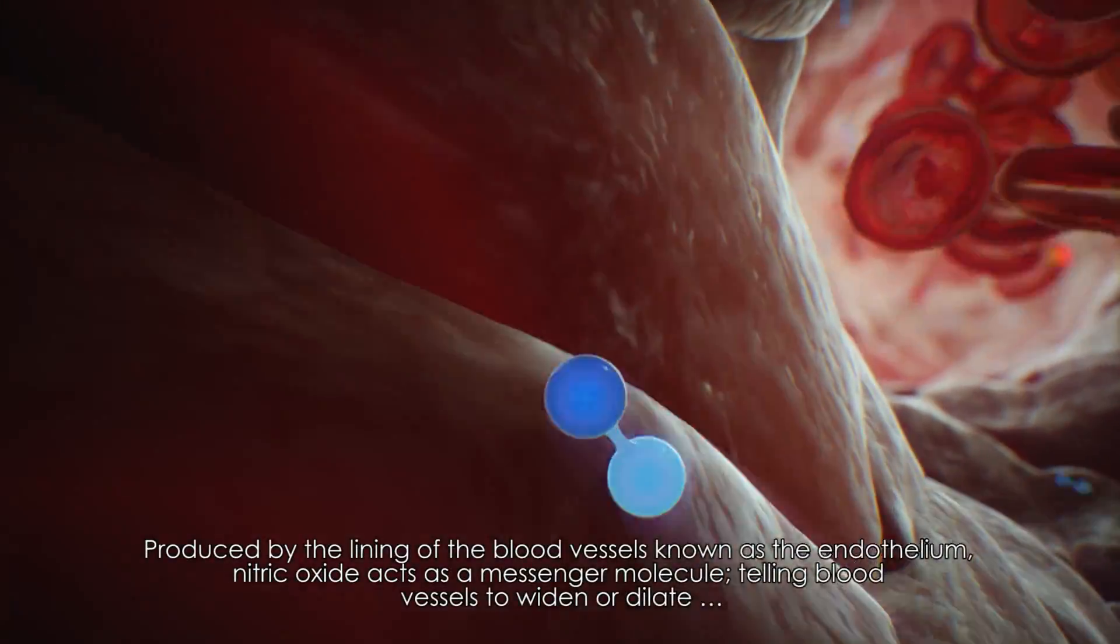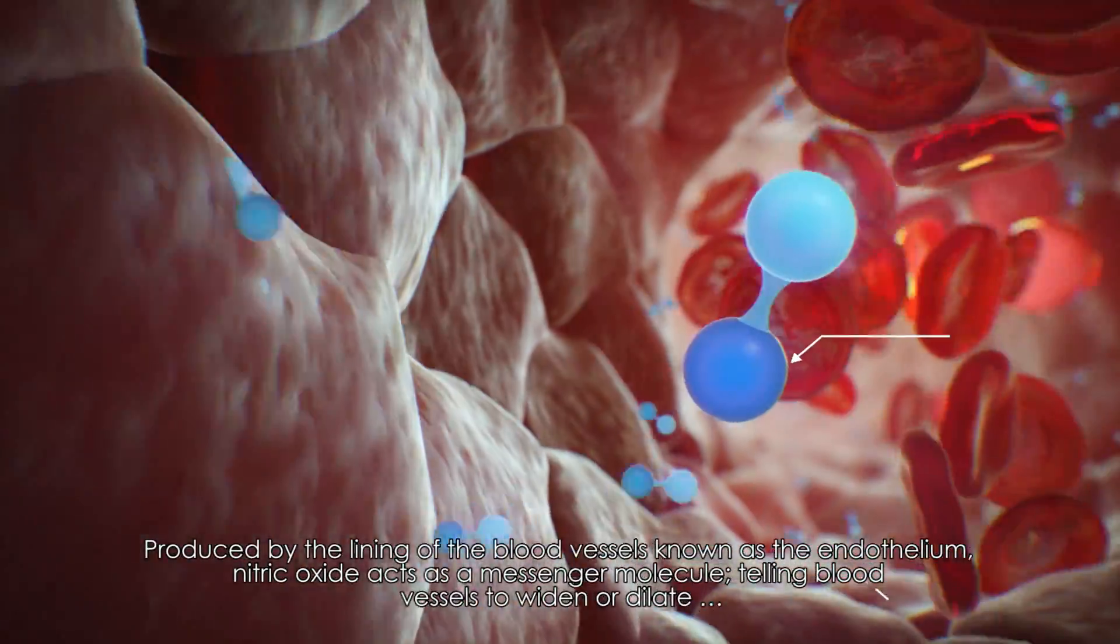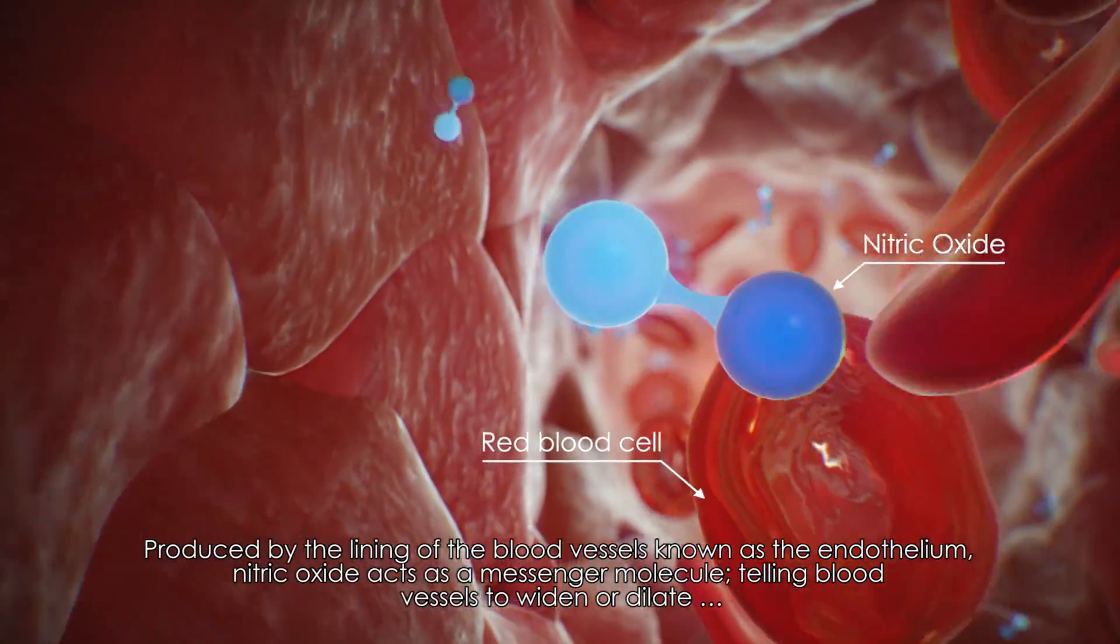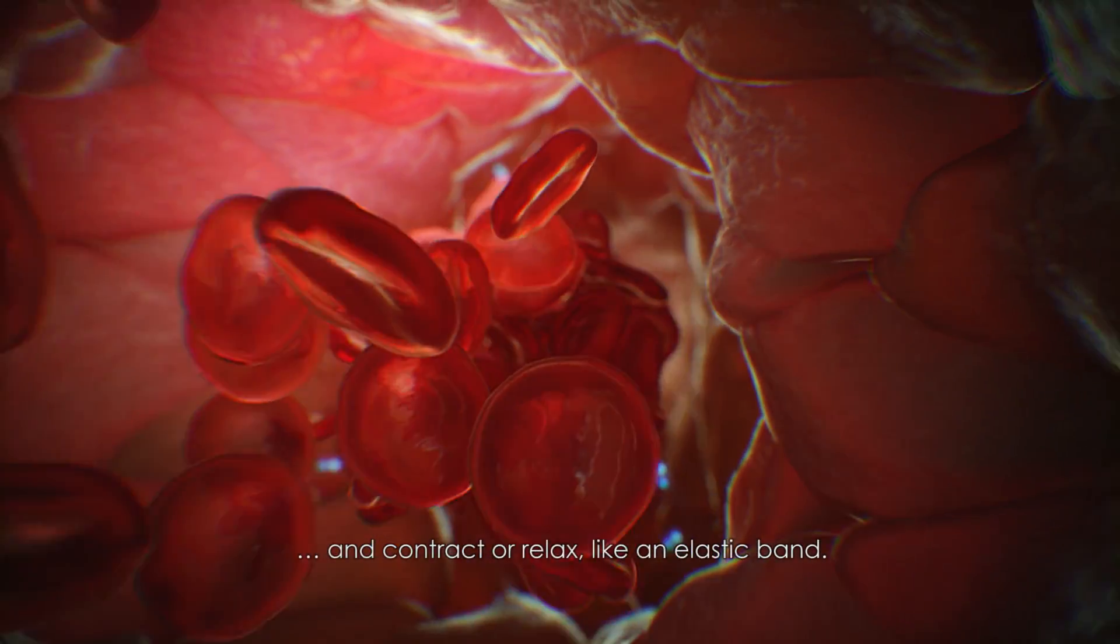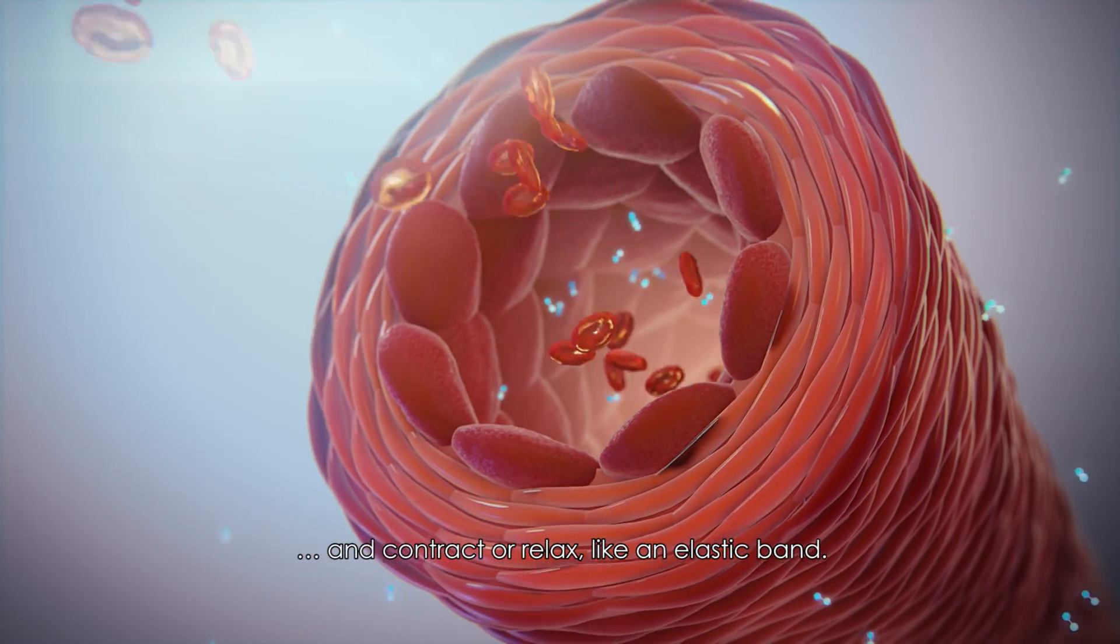Produced by the lining of the blood vessels known as the endothelium, nitric oxide acts as a messenger molecule telling blood vessels to widen or dilate and contract or relax, like an elastic band.